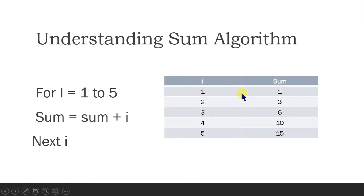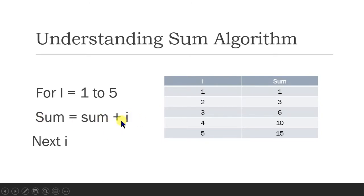Current sum is 1, then 2 plus 1 — next sum will become 3. Then i will be 3. Sum equals sum plus i, which means 3 plus 3 equals 6. So it loops like this. Always remember: first the right side is solved and assigned into the left side. The current value of sum — we add i into it and then save it in the sum variable. So sum will become the total of the previous sum and the next value. This is how sum works.